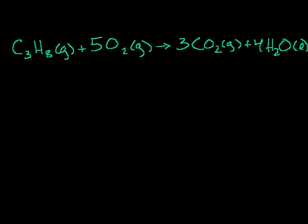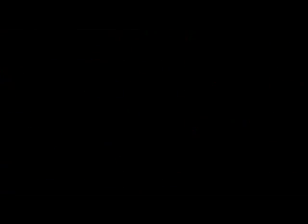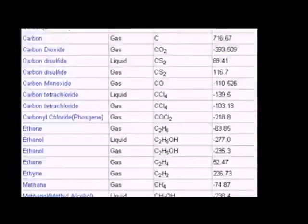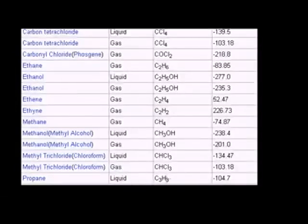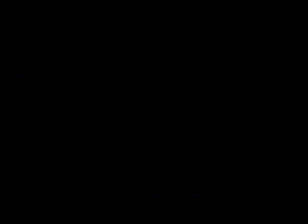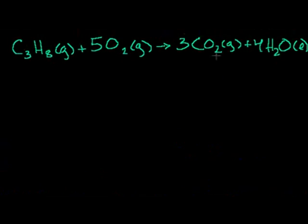Let's do one more. Let's say I have some propane and I'm going to combust it — oxidize the propane to yield carbon dioxide and water. Same drill. What's the heat of formation of propane? Propane in its liquid state has a heat of formation of minus 104.7 kilojoules per mole.